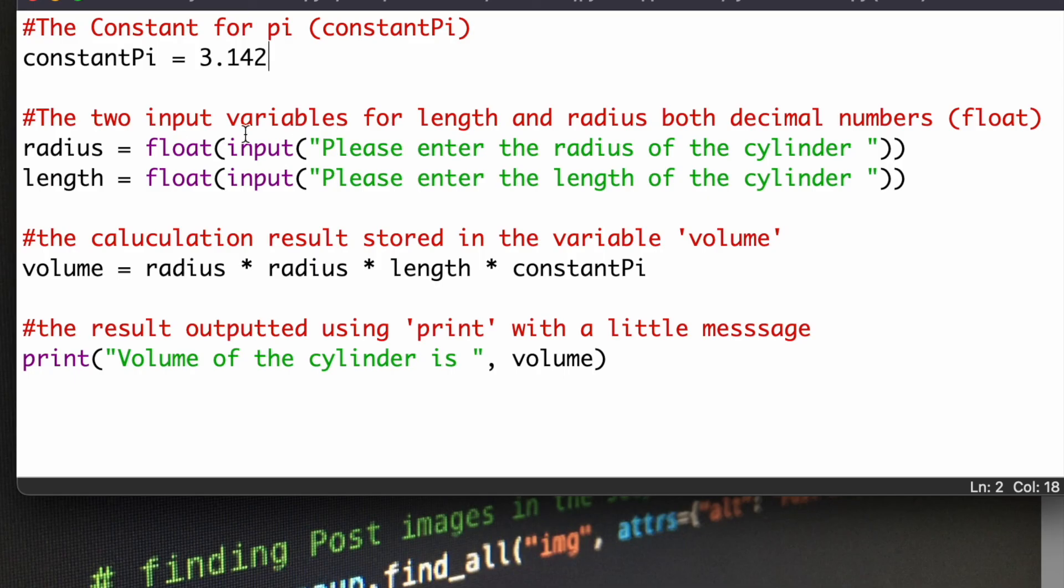Then we have two variables, and these are float variables, which means they can be stored as decimal numbers. So, the radius, a message to say, please enter the radius, and again the same with the length, both float variables. And then we have a variable called volume, and in volume we've stored the calculation, radius times radius times length times constant pi.